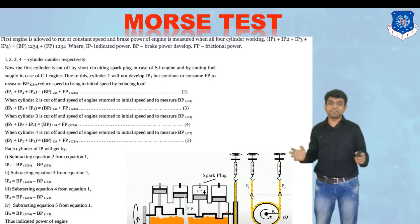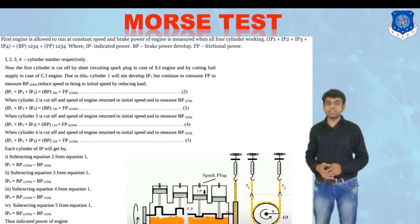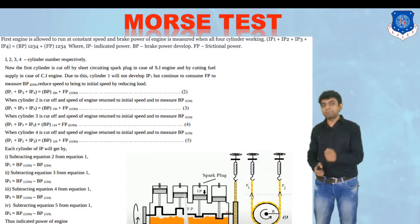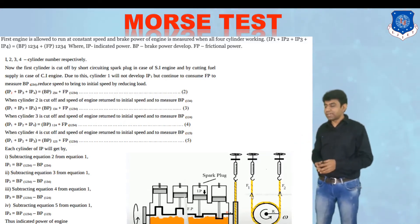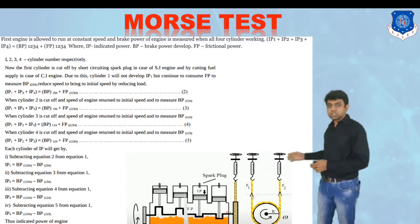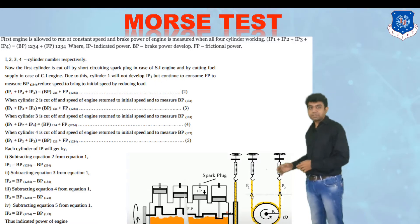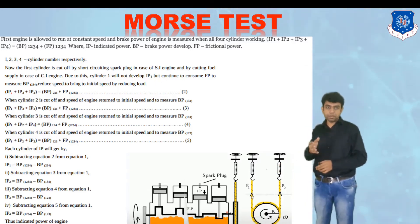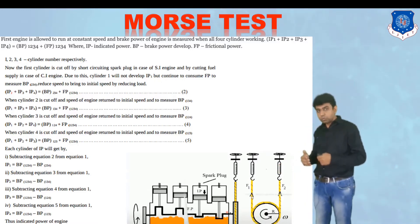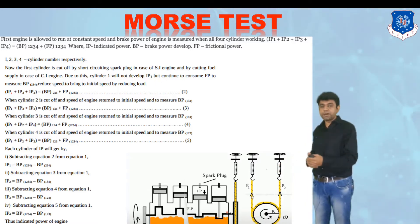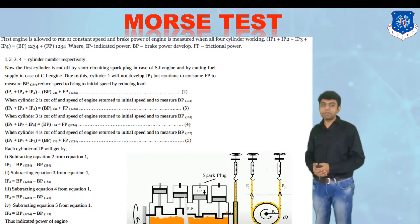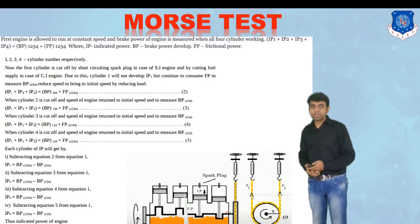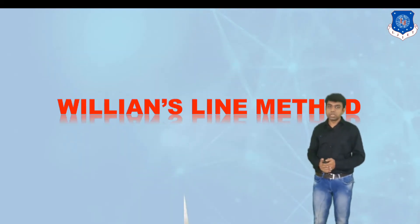So that is all about the Moore's Test. Indirectly, we are finding out the indicated power with the help of a simple dynamometer. Although a dynamometer is normally used just to find brake power, through brake power measurements we can also determine the indicated power.